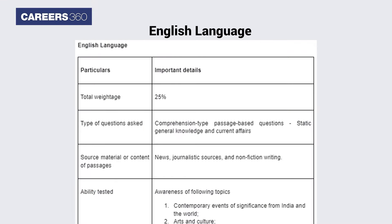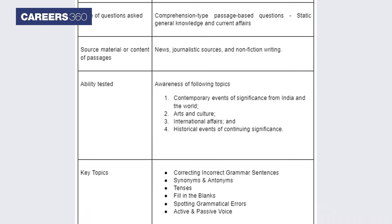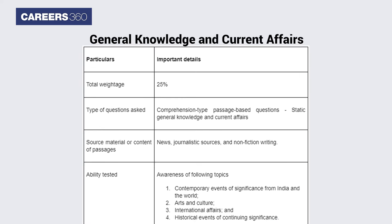In the English language section, the exam will comprise comprehension-type passage-based questions. Such questions test candidates' comprehension and language skills, ability to draw inferences and conclusions, ability to summarize passages, and identify arguments and viewpoints. To prepare for this section, candidates are advised to refer to 'Word Power Made Easy' by Norman Lewis and 'High School English Grammar and Composition' by Wren and Martin. Reading newspapers like The Hindu and The Indian Express is always recommended for preparation for this section.